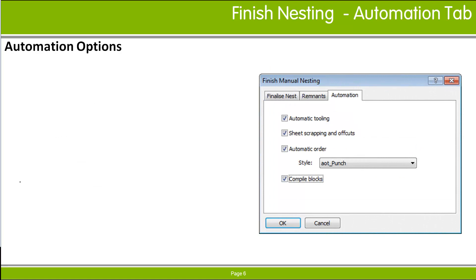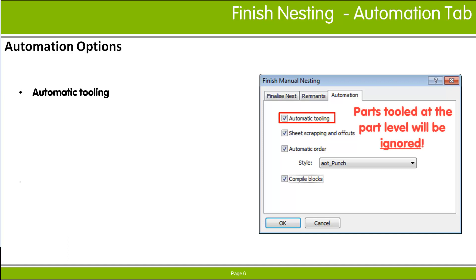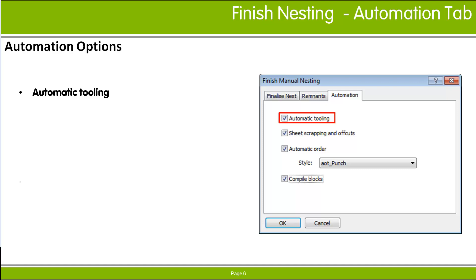The Automation tab provides the options to run AutoTooling on the current nest. Any tooling already in the nest that was added by an earlier run of AutoTooling will be replaced using AutoTool settings defined in the manufacturing database for the current machine and material, or from the default system data for the machine. You use the Automatic Tooling dialog to configure and save these settings. If an error occurs while running AutoTooling, you will be notified of the problem, and further details will be logged on the Automatic Tooling dialog's report page.